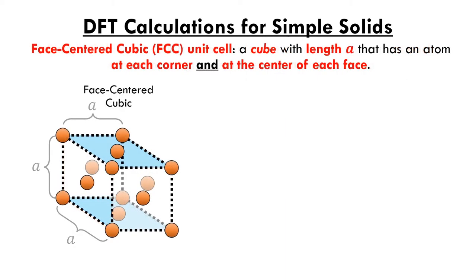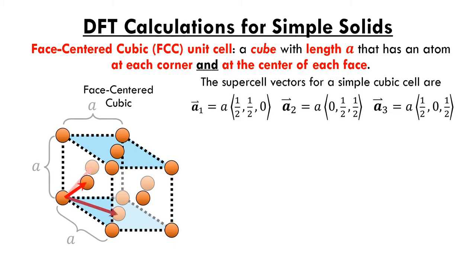Now we can apply this to a crystal structure of greater interest: a face-centered cubic, or FCC, structure. There are many examples of materials with this structure. Some notable examples are the coinage metals — copper, silver, and gold. The FCC unit cell is very similar to the simple cubic structure: it's a cube with sides of length A and an atom at each corner, but additionally it has an atom at the center of each face — hence the name face-centered cubic.